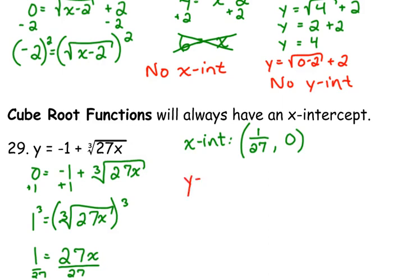And then the y-intercept, just like with all the other functions, we want to plug in 0 for x. Well, that's nice because 27 times 0 is 0. The cube root of 0 is 0. So, that says our y-intercept is negative 1. So, our y-intercept in point form, the x is 0, the y is negative 1.